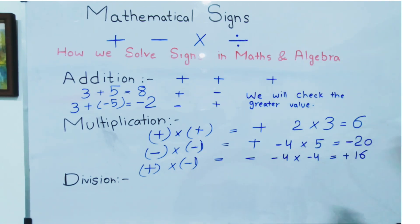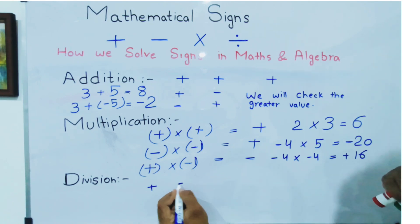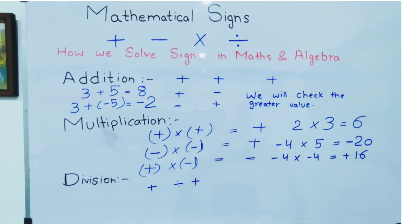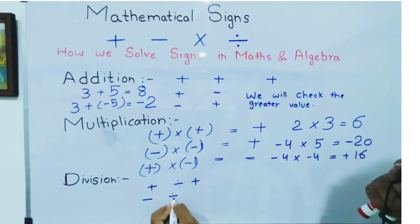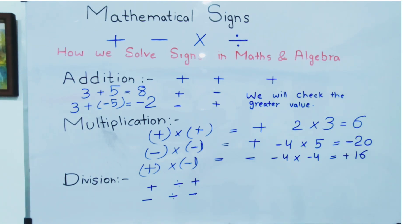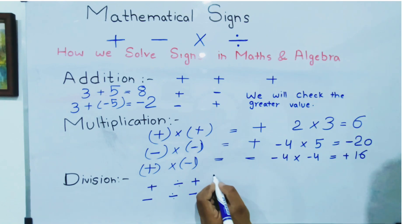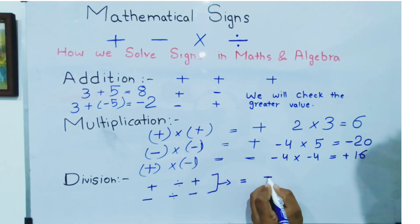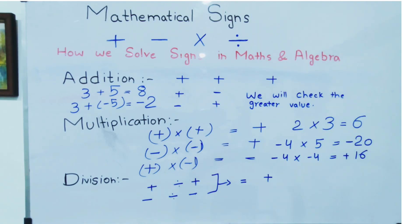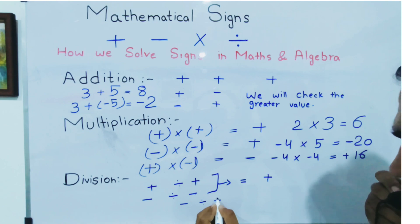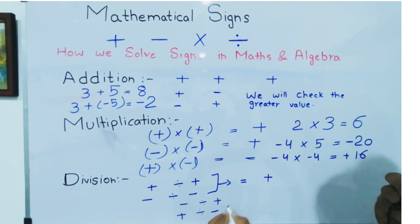Now we are going to division. If both signs are the same and both values are divided with each other — like plus divided by plus, or negative divided by negative — then the answer will be positive. But if both values have different signs and are divided — like minus divided by plus, or plus divided by minus — then the answer will be negative.